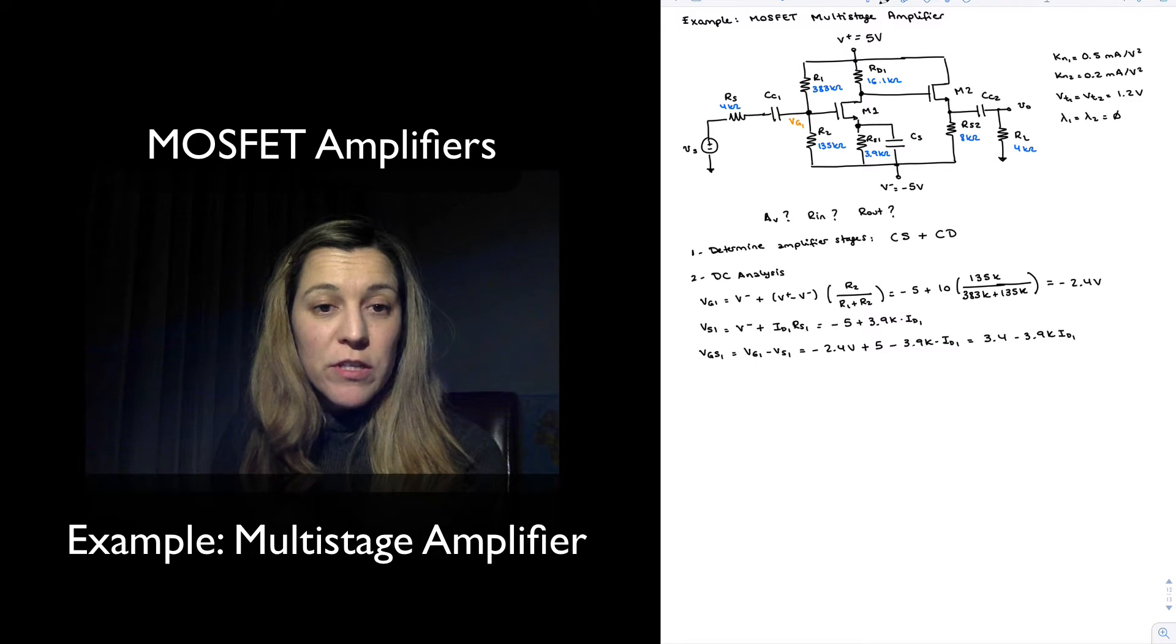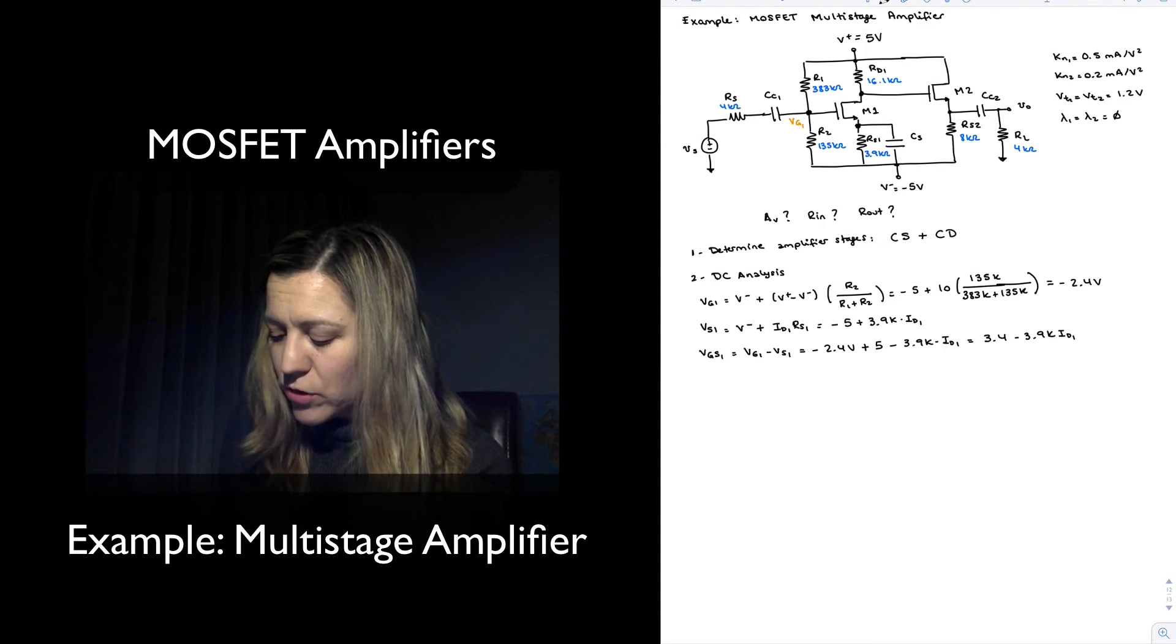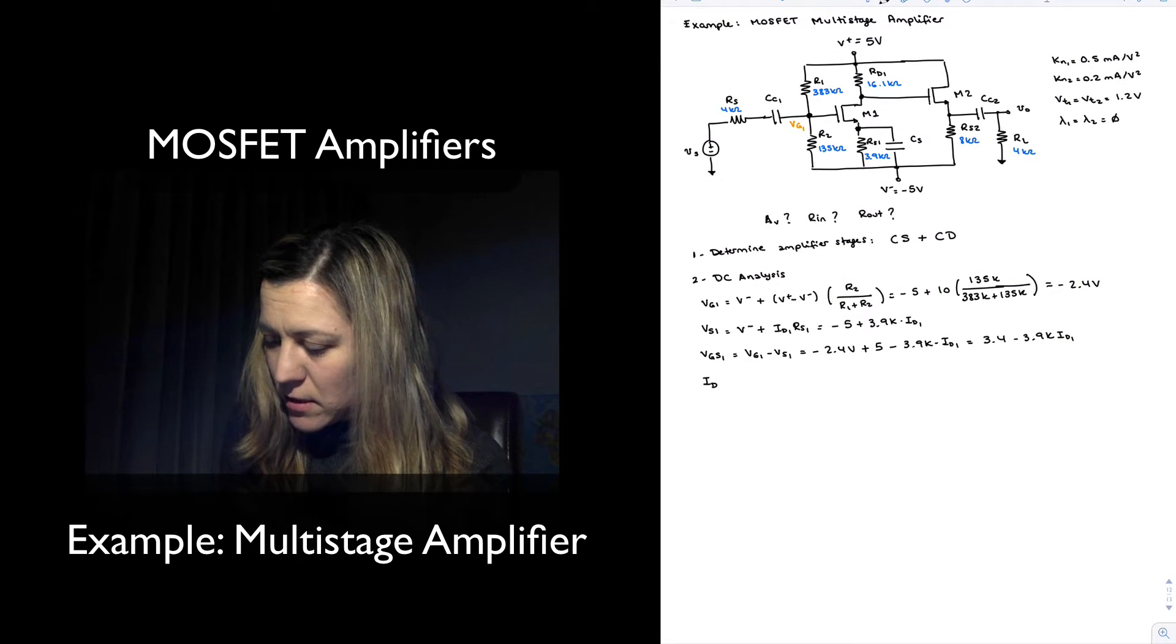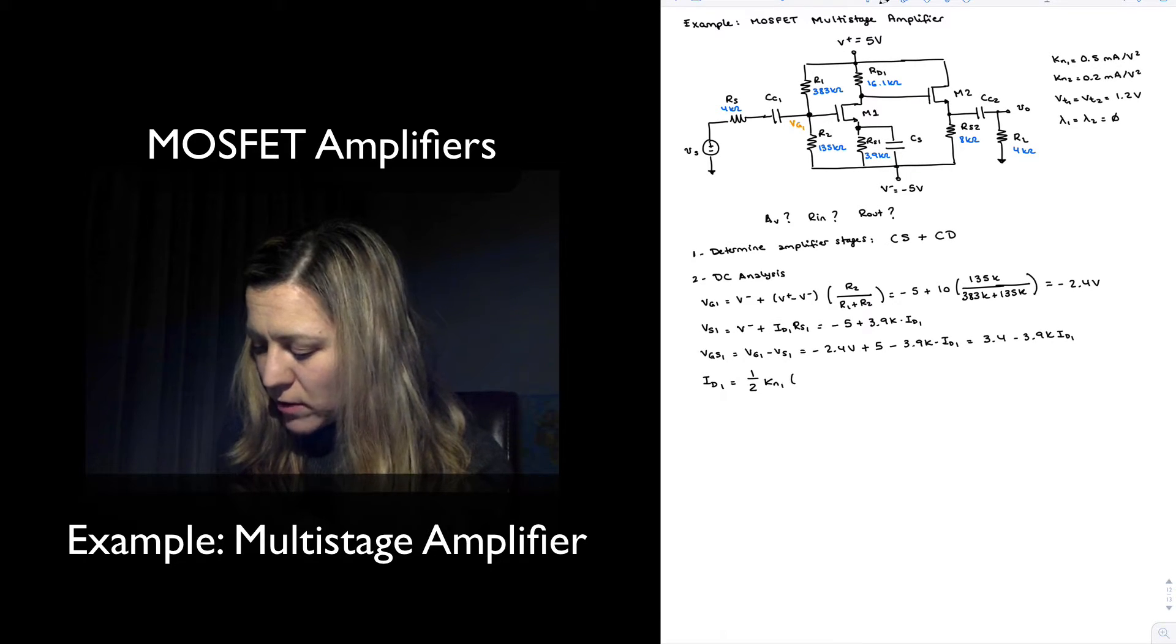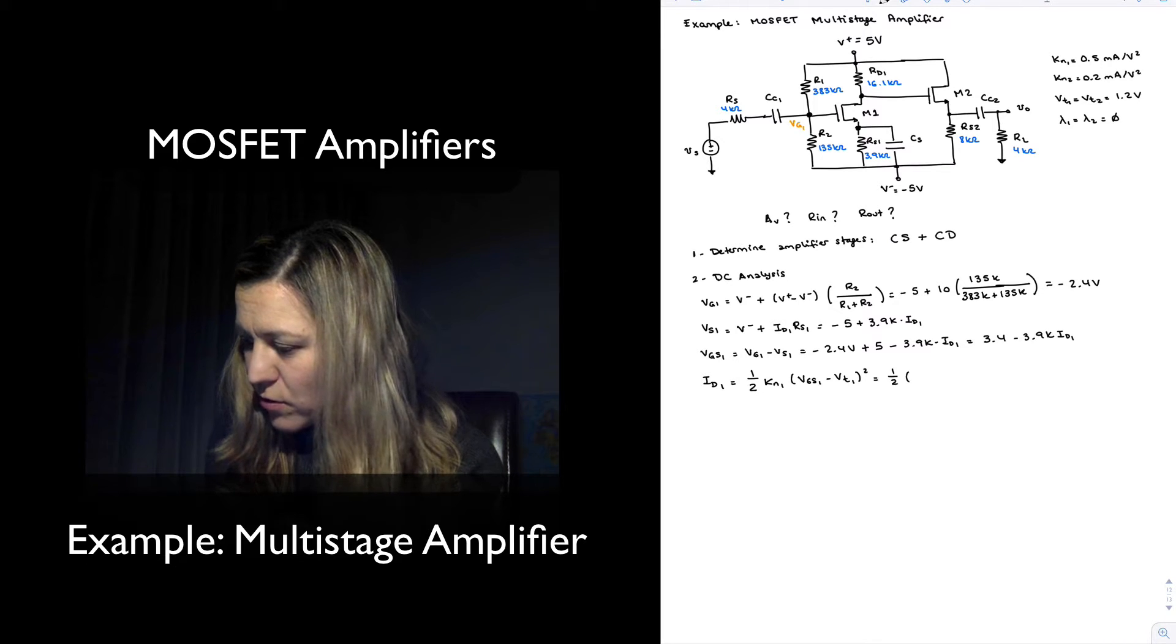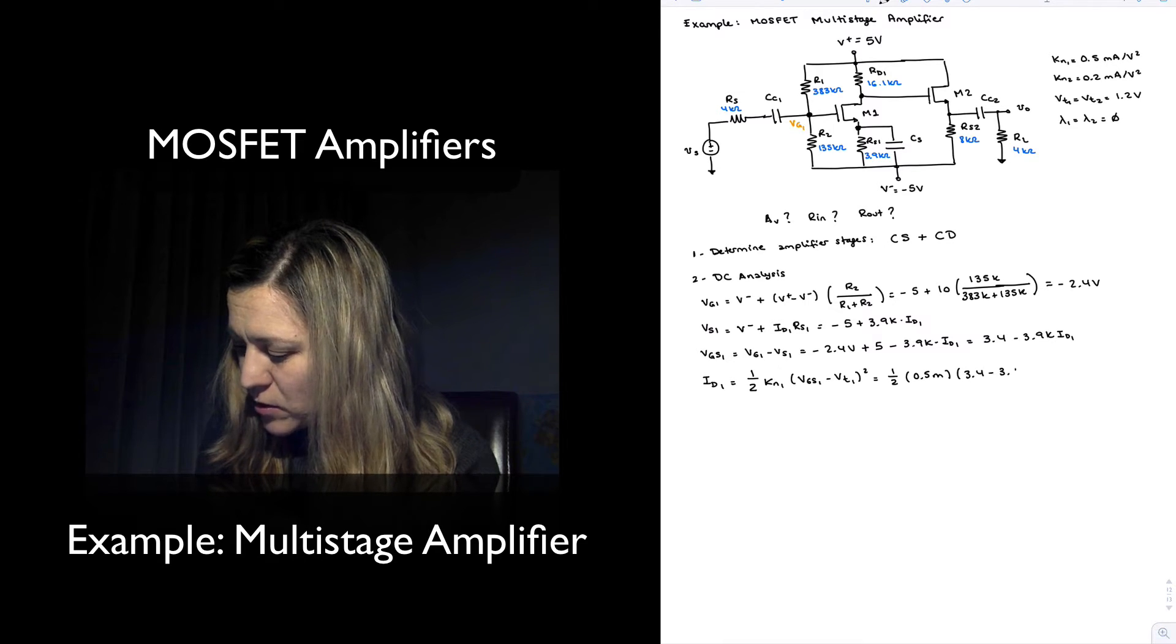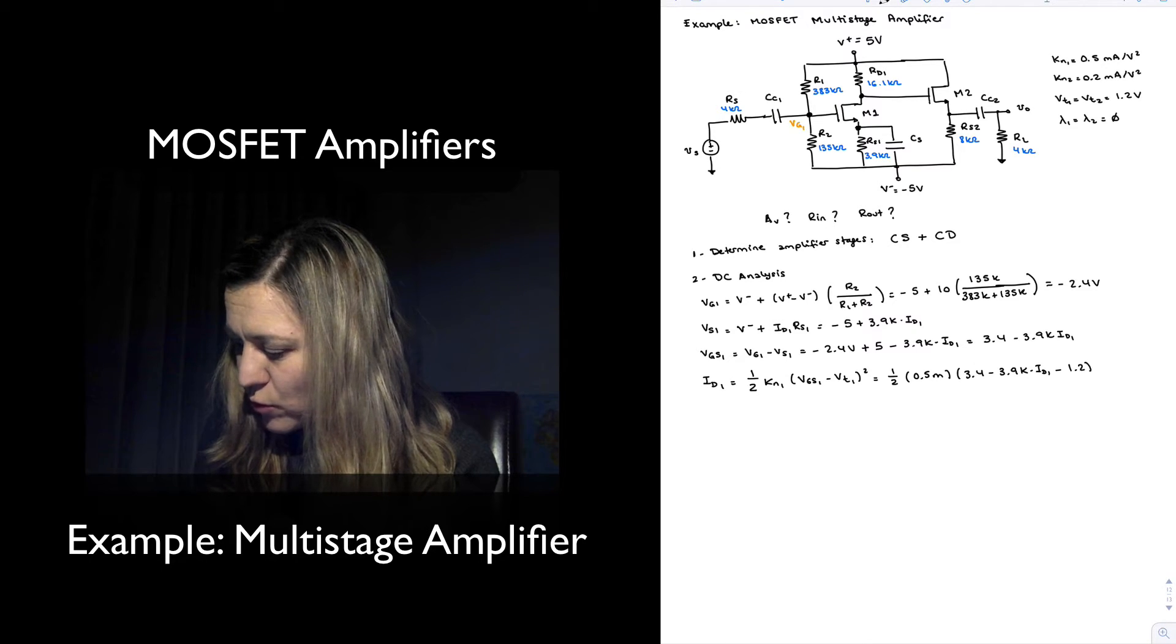With the value of VGS, I can now write the equation for ID assuming the transistor is in saturation region, which is a usual assumption if we have an amplifier. ID1 is going to be equal to one-half of KN1 times VGS1 minus VT1 squared, or in essence equal to one-half of 0.5 milliamps times 3.4 minus 3.9k times ID1 minus 1.2 volts squared.